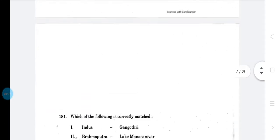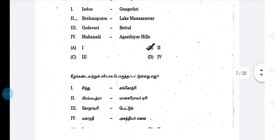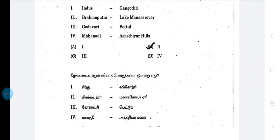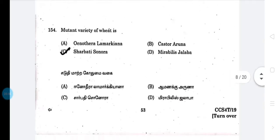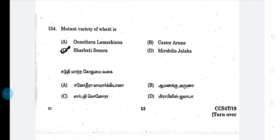The answer is — you missed the question, so I will give you the answer here. Option 2: Brahmaputra, Manasarovar. This is a good question. Next question — the answer is Option C.